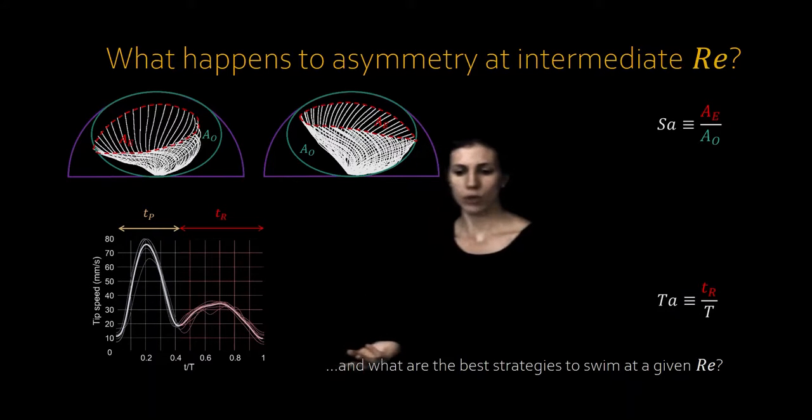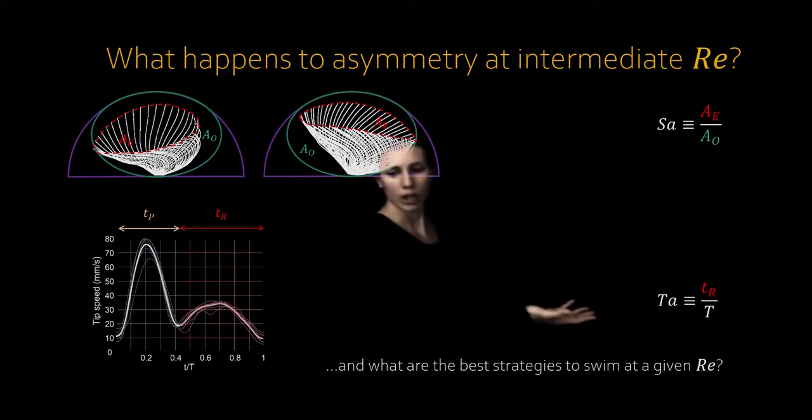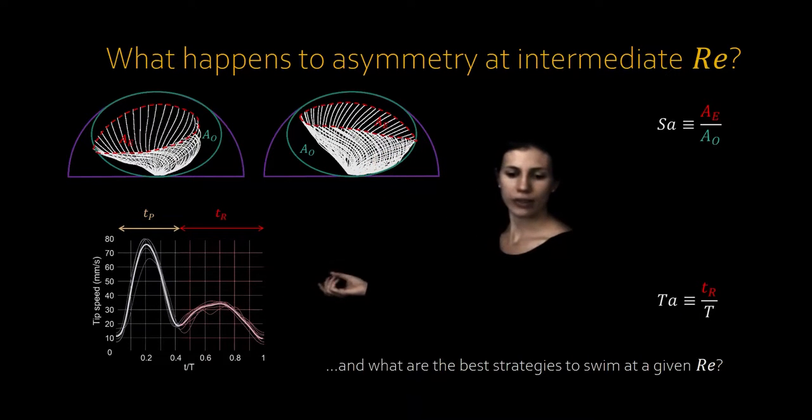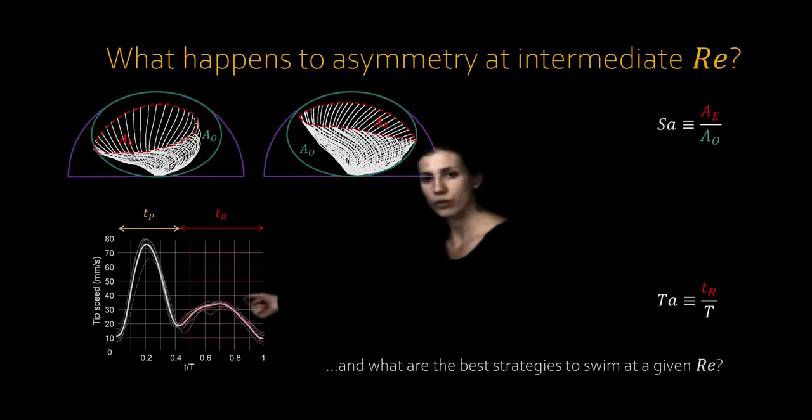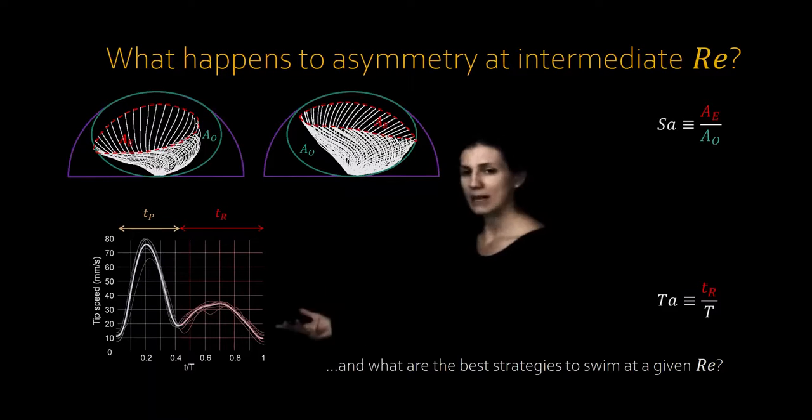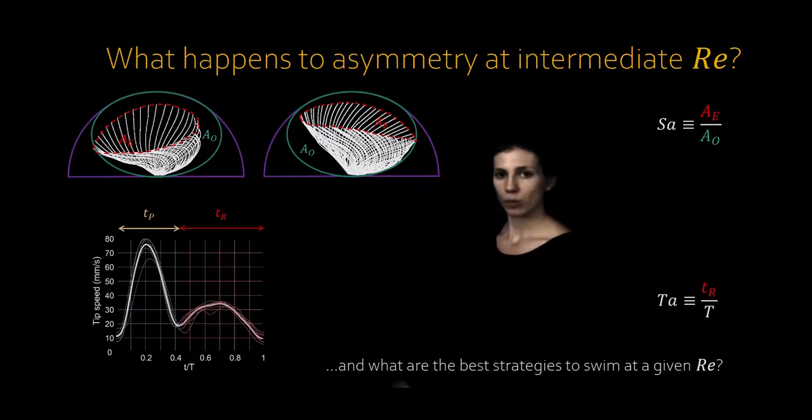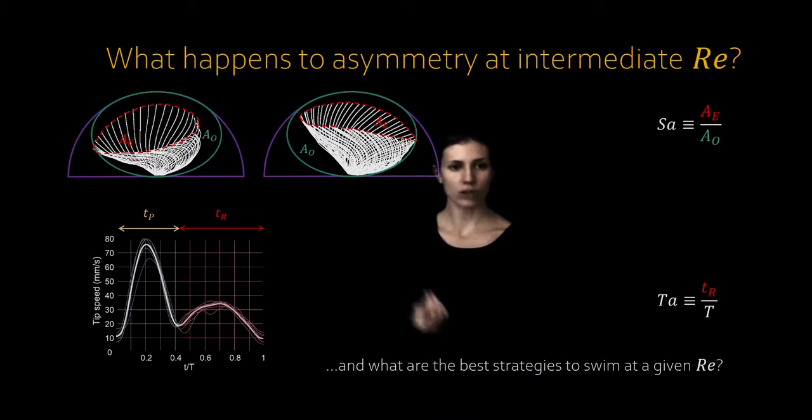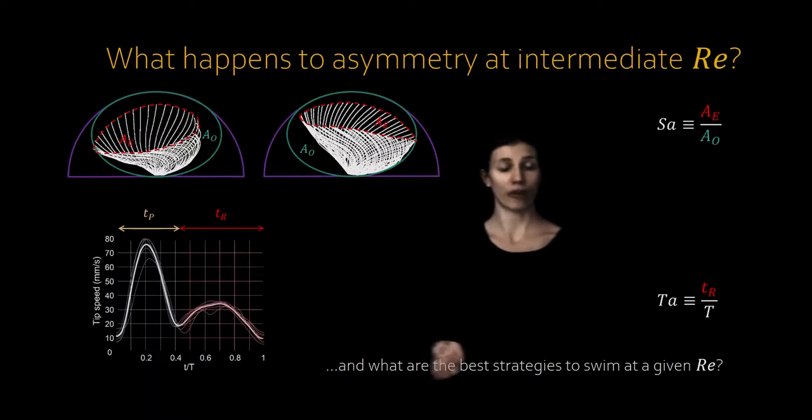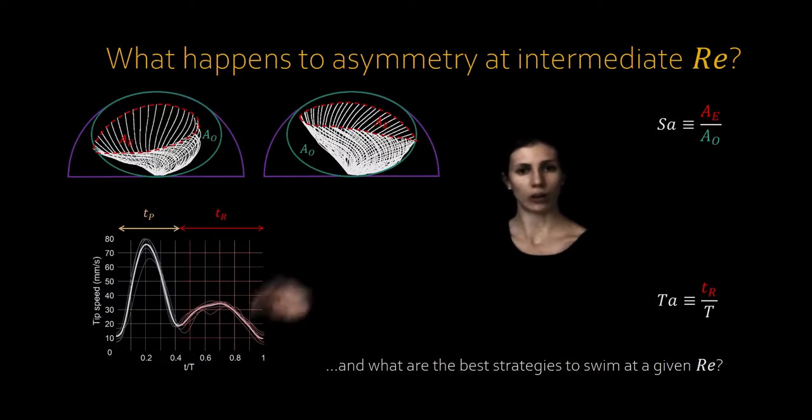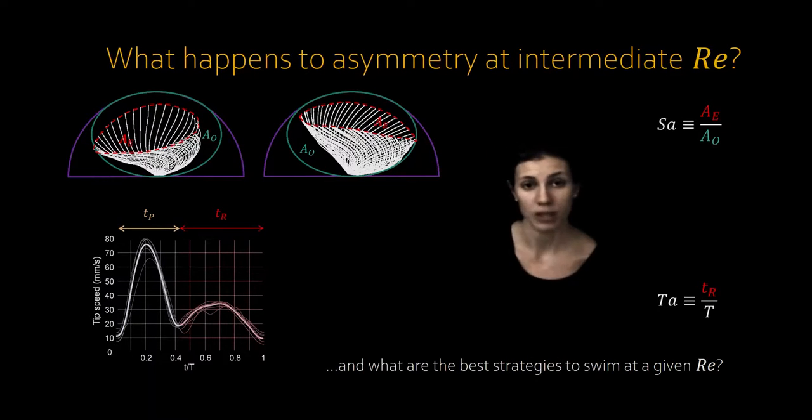We can also define a temporal asymmetry parameter TA. Here you can see a plot of the tip speed of the ctene as it goes through one beat cycle. We're going to define our temporal asymmetry as the fraction of the beat cycle that is taken up by the recovery stroke. A TA of 0.5 would mean that the stroke is totally symmetric. A TA value of above 0.5 would mean that TP is shorter than TR and the power stroke is fast compared to the recovery stroke. A TA of less than 0.5 would mean that the recovery stroke is faster than the power stroke.